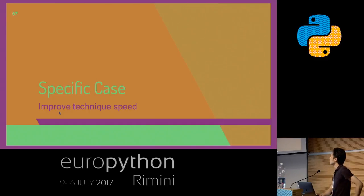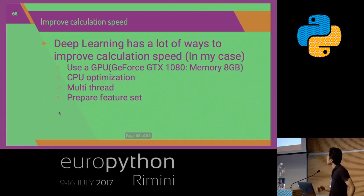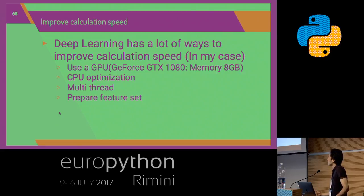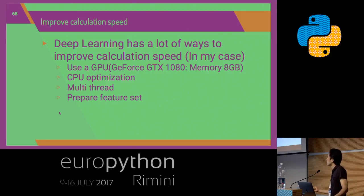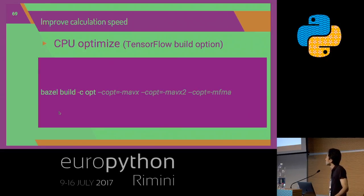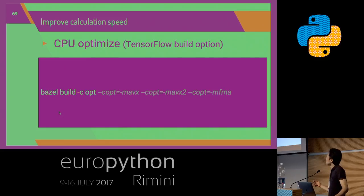For improving technique speed, deep learning offers many ways to improve calculation speed, such as using GPU, CPU optimization, memory slots, and preparing feature sets. CPU optimization is very effective for data augmentation. If you use TensorFlow, setting the build option makes it possible to apply CPU optimization. However, you need to check which optimization options are available for your hardware.